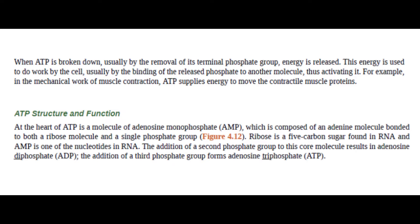ATP Structure and Function. At the heart of ATP is a molecule of adenosine monophosphate, AMP, which is composed of an adenine molecule bonded to both a ribose molecule and a single phosphate group. Ribose is a 5-carbon sugar found in RNA, and AMP is one of the nucleotides in RNA. The addition of a second phosphate group to this core molecule results in adenosine diphosphate, ADP. The addition of a third phosphate group forms adenosine triphosphate, ATP.